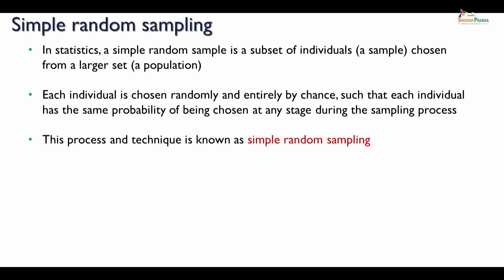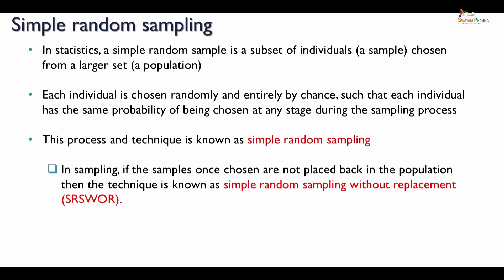Simple random sampling can be done in several ways. Simple random sampling without replacement means that during the sampling, if the samples once chosen are not placed back in the population, then the technique is known as simple random sampling without replacement. That is commonly known as SRSWOR, which is the abbreviation of simple random sampling without replacement.